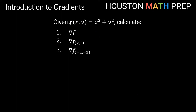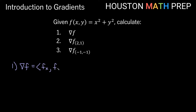Moving to our first example: we have f(x, y) = x² + y². We're going to find three things — the gradient del f in general, the gradient at the point (2, 1), and the gradient at the point (-1, -1). Remember that del f is going to be the vector with partial fx and partial fy as its components, and the answer will be a vector function.